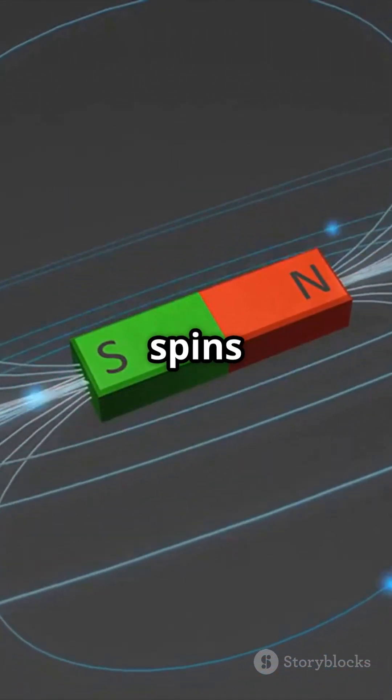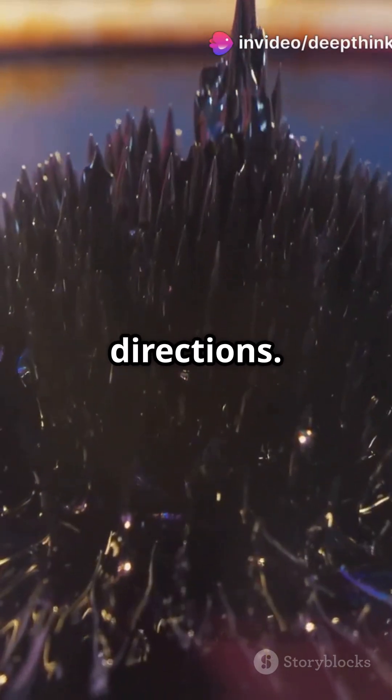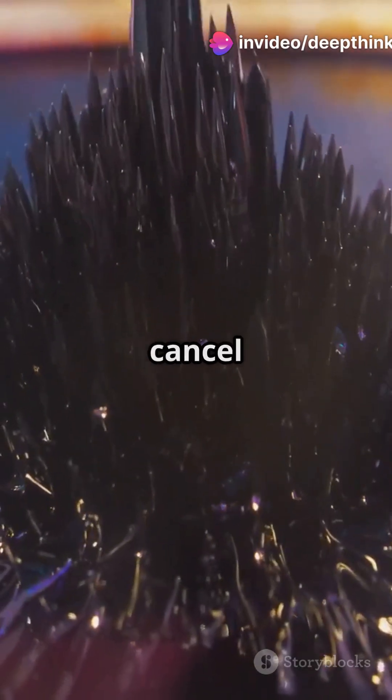In most materials, electron spins are all jumbled, pointing in random directions. Their little magnetic effects cancel each other out.